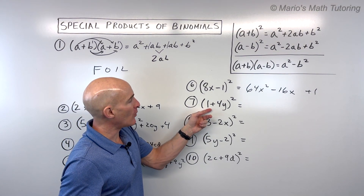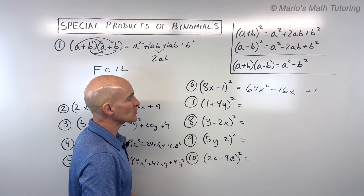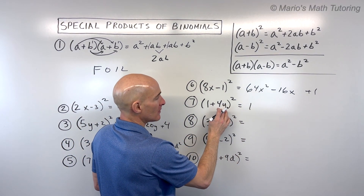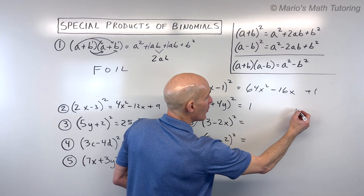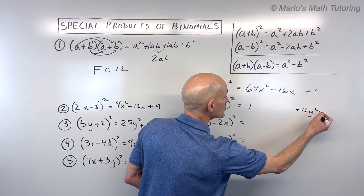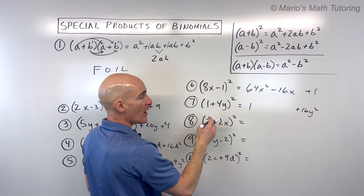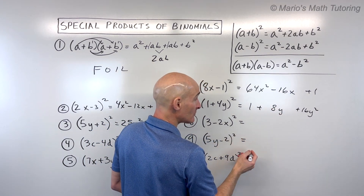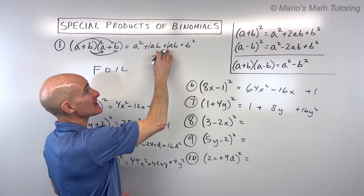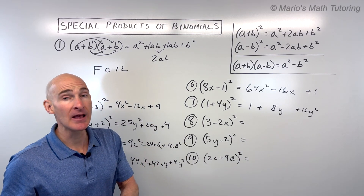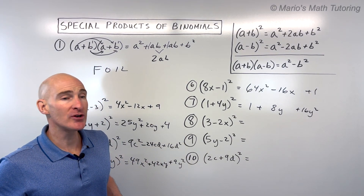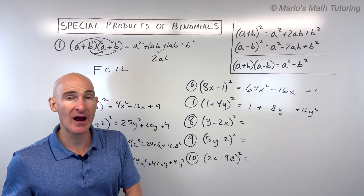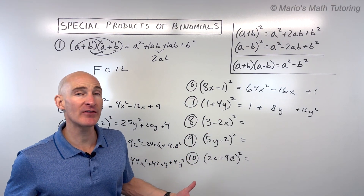For number seven, 1 plus 4y, quantity squared: first term squared is 1. Last term squared: 4y times 4y is 16y squared. Then 1 times 4y is 4y, doubled is 8y. When you're first learning this, you might want to write it twice and use FOIL, distributive property, or the box method — whichever you prefer. But after a while, using the shortcut becomes much faster.